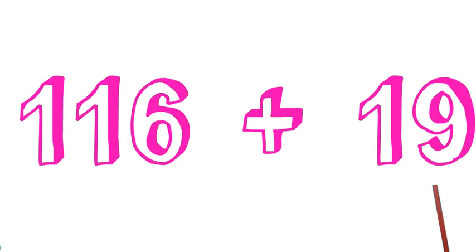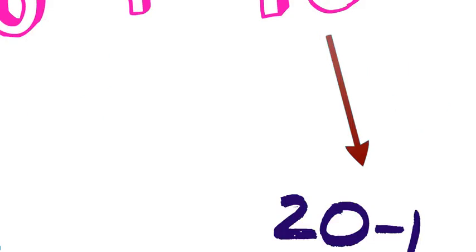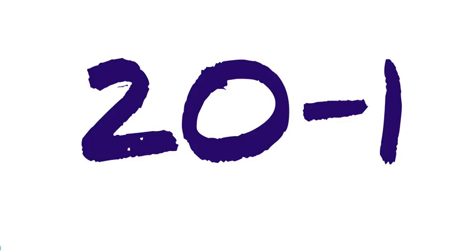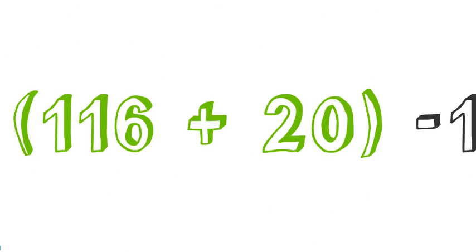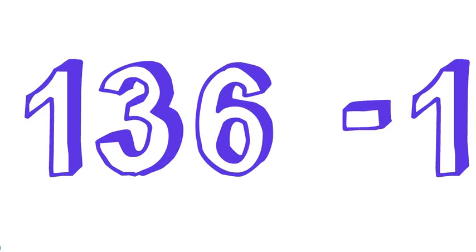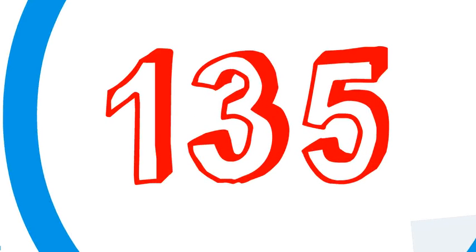Let's have an example. Let's add 116 with 19. We can simplify 19 as 20 minus 1, so our problem becomes 116 plus 20 minus 1. We can easily add 116 with 20, as 20 is a multiple of 10, which gives us 136 minus 1. Subtract 1 and you get 135 as the answer. Simple?